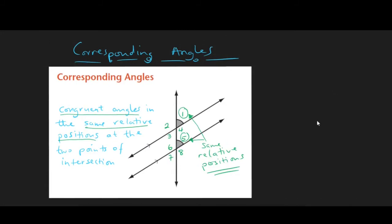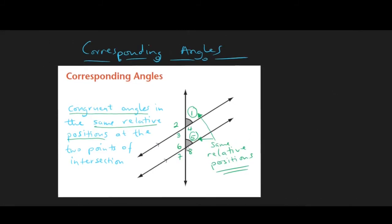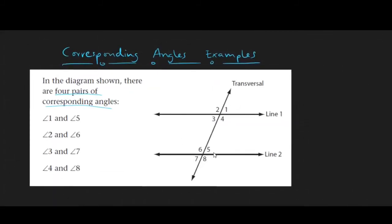Corresponding angles are also congruent. However, they do not share a common point of intersection but occupy the same relative positions at the two points of intersection when the transversal crosses two parallel lines. In this example, angle 1 and angle 5 are in the same relative position, so they are corresponding. In our transversal example, the corresponding pairs are: 1 and 5, 4 and 8, 7 and 3, and 6 and 2.